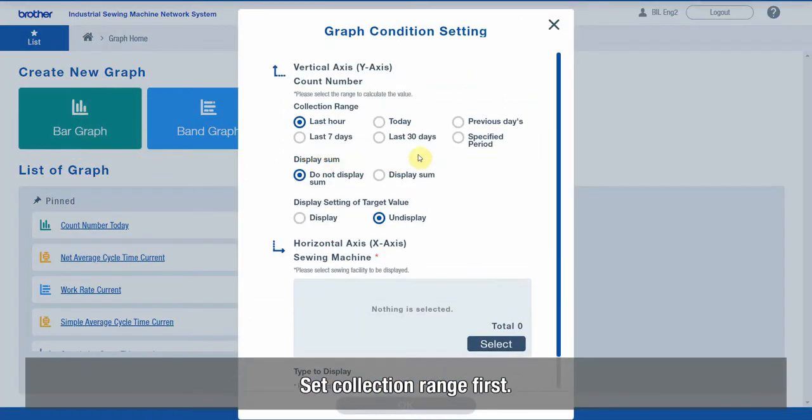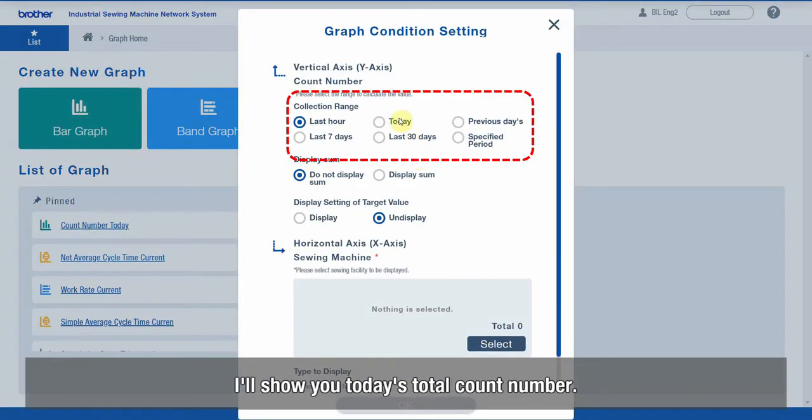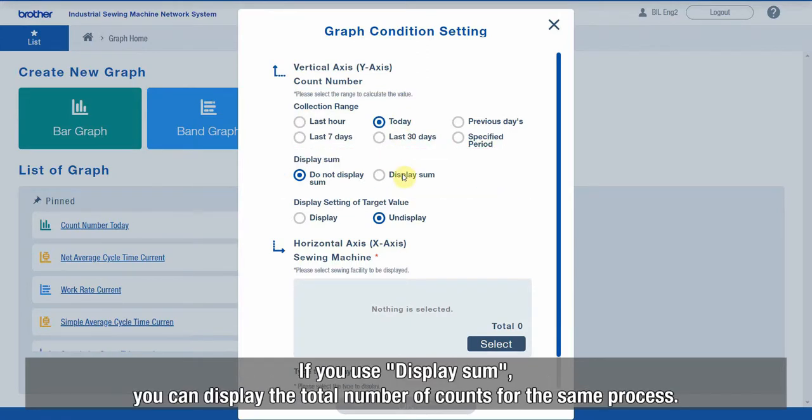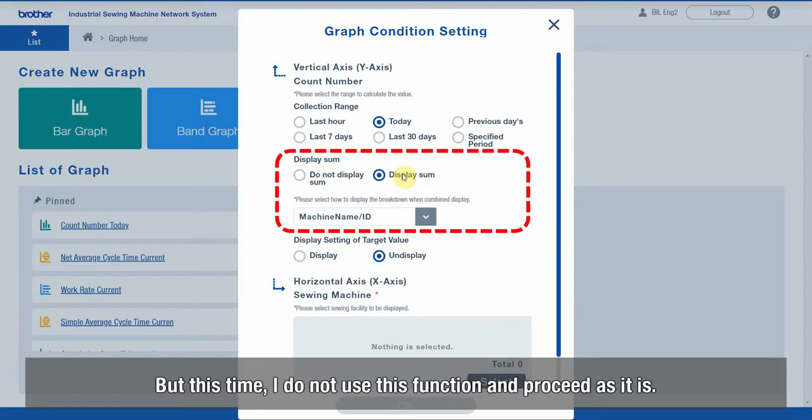Set collection range first. I'll show you today's total count number. If you use DisplaySum, you can display the total number of counts for the same process. But this time, I do not use this function and proceed as it is.